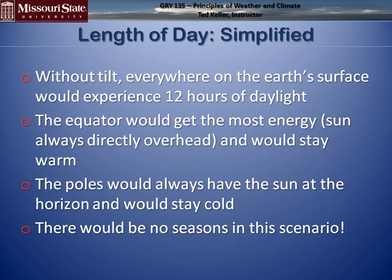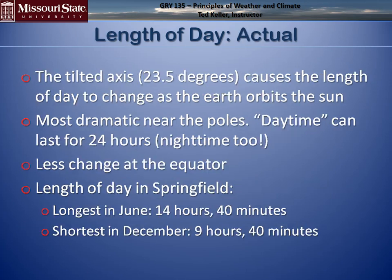Length of day is also involved. Without the tilt, everywhere on Earth's surface would have 12 hours of daylight. The equator would get the most energy all the time, and the poles would have the Sun at the horizon and would stay cold — there'd be no seasons. With the tilt, length of day changes dramatically near the poles, where daytime can last 24 hours, and nighttime too, with less change at the equator.